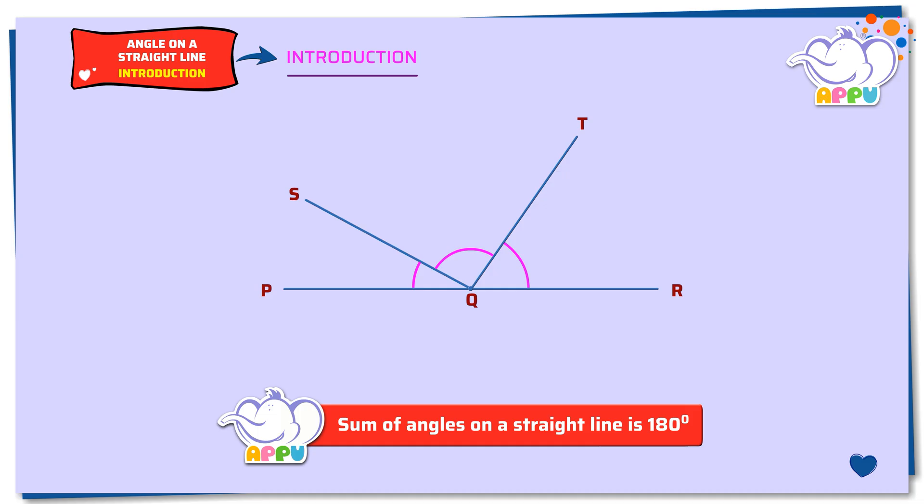Since the sum of angles on a straight line is always equal to 180 degrees, angle PQS plus angle SQT plus angle TQR equals 180 degrees.